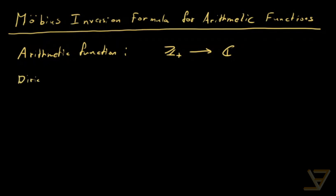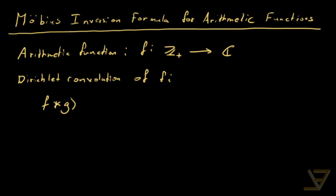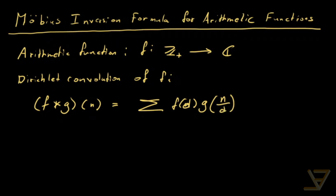The Dirichlet convolution of arithmetic functions f and g is the following function, which is also an arithmetic function. It's (f★g)(n), equal to the sum of f(d) times g(n/d) where d iterates over all positive divisors of n. Another way of writing this is the sum of f(a) times g(b) where a and b are pairs of positive integers that multiply to n.